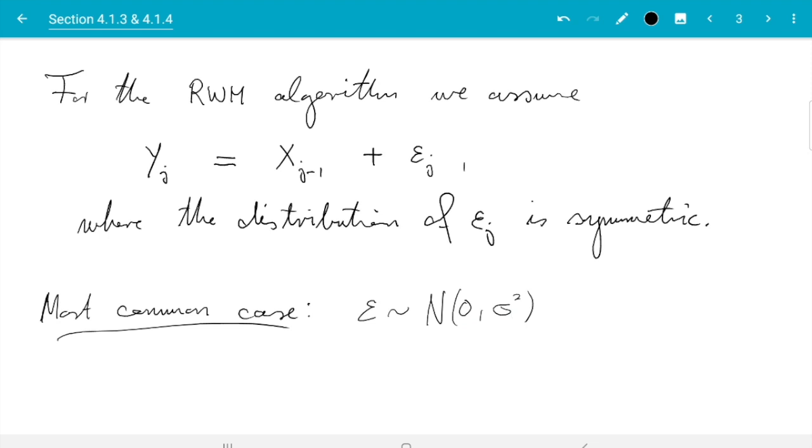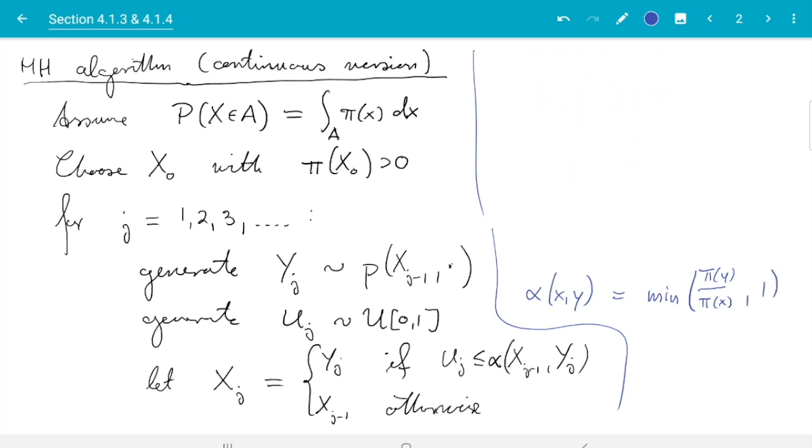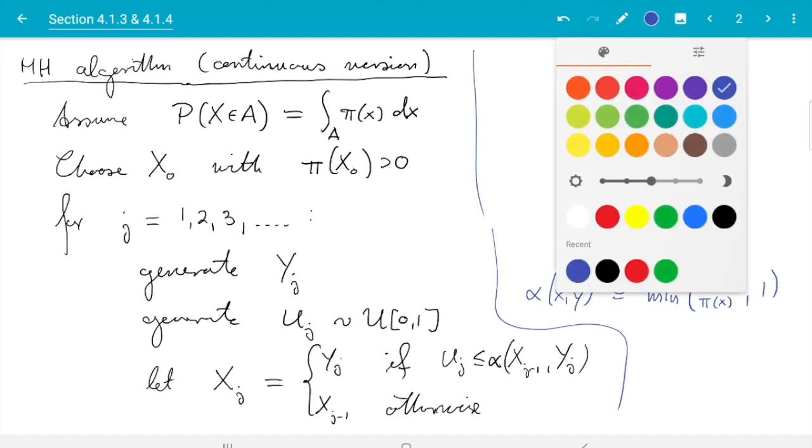And let's see what we get for this case. So in the algorithm we already said alpha simplifies to just have pi of y over pi of x here. We don't have any reference to the transition density left. Because down here where we generate y we know what to do. So we just said for a random walk we take the previous state, so xj minus 1 plus epsilon j.